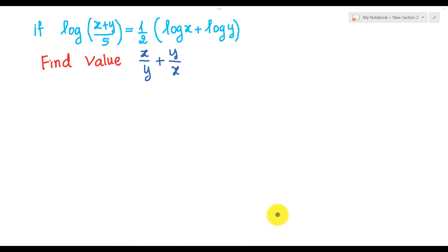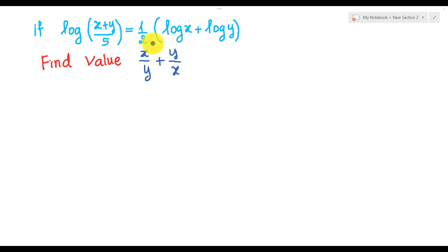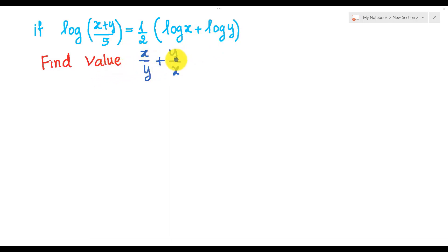Hello everyone. Today I have one exercise on screen. If log of (h plus y) over 5 equals 1 over 2 multiplied by log of h plus log of y. Find the value of h over y plus y over h.